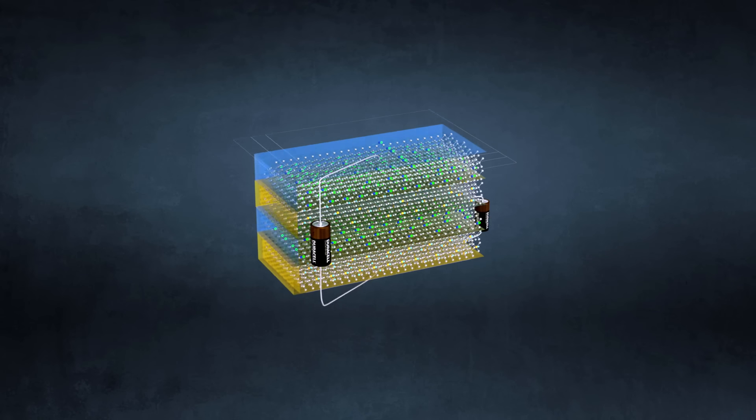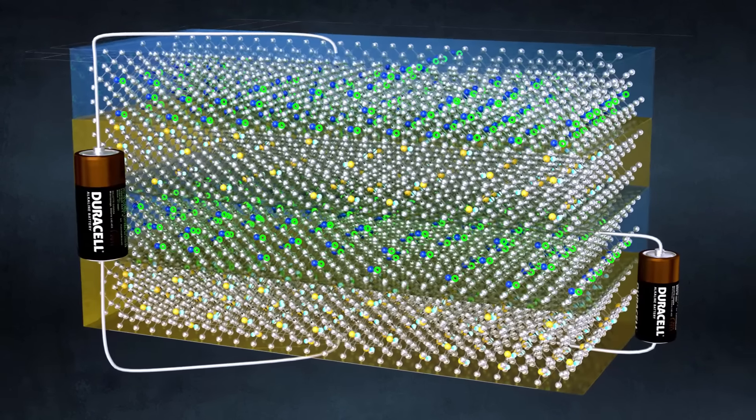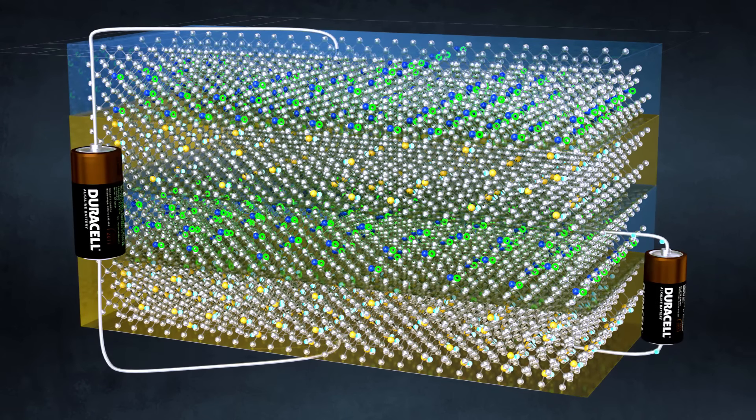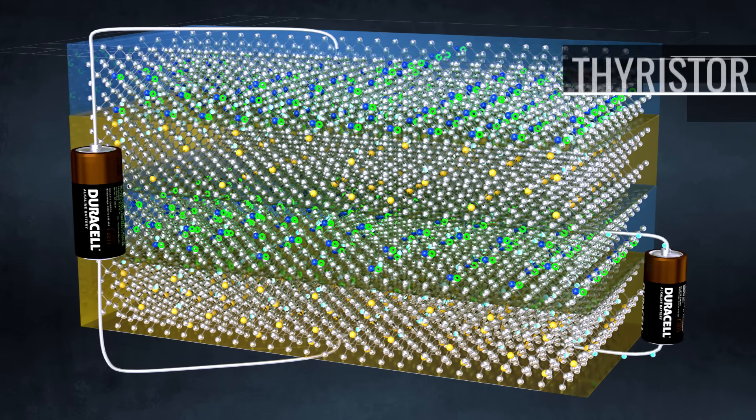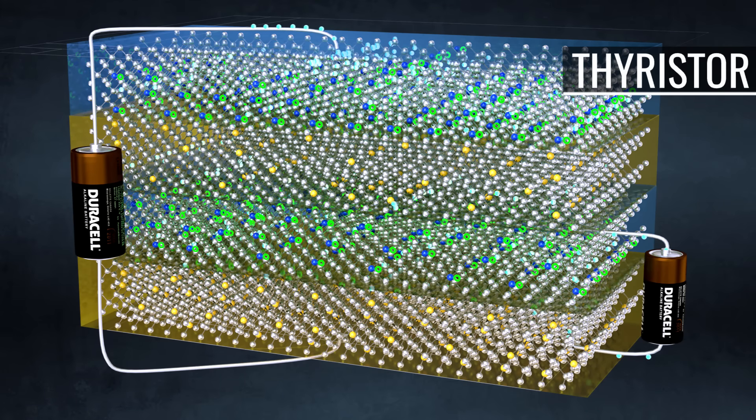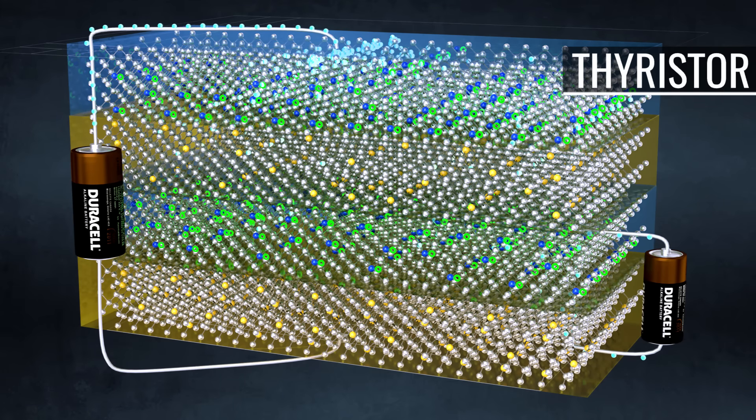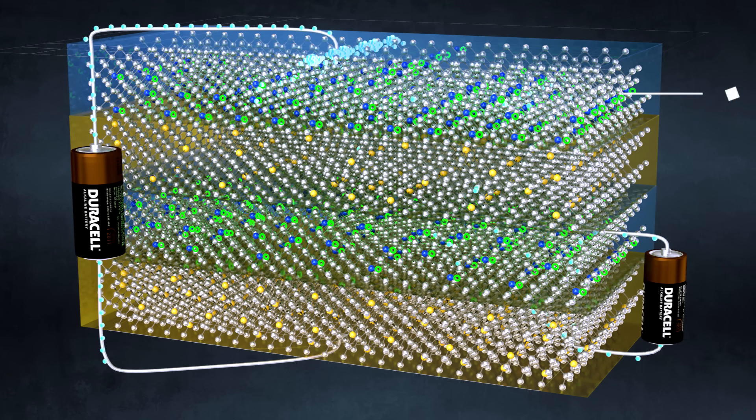To overcome this problem, in 1950, William Shockley proposed a very interesting power switch known as a thyristor. In thyristors, unlike with transistors, no such continuous secondary supply is needed.